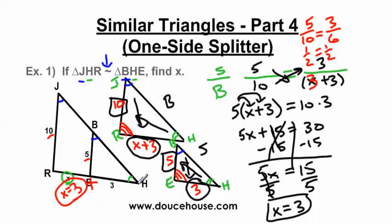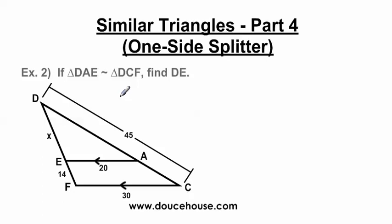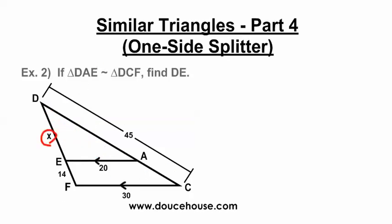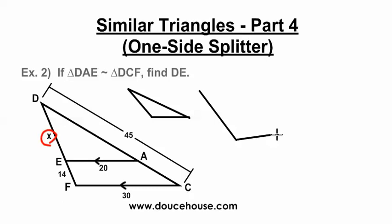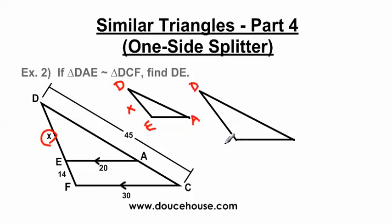Moving on, we have another example. This is the hardest of the three problems. It says if triangle DAE is similar to triangle DCF, find DE. I've got a small triangle inside a big triangle. I'm a fan of drawing the triangles to organize your thoughts, so I'll draw a small one and a bigger one. This X here represents DE. You could label D, E, A for the small triangle and D, F, C for the big triangle — that helps identify which angles correspond.